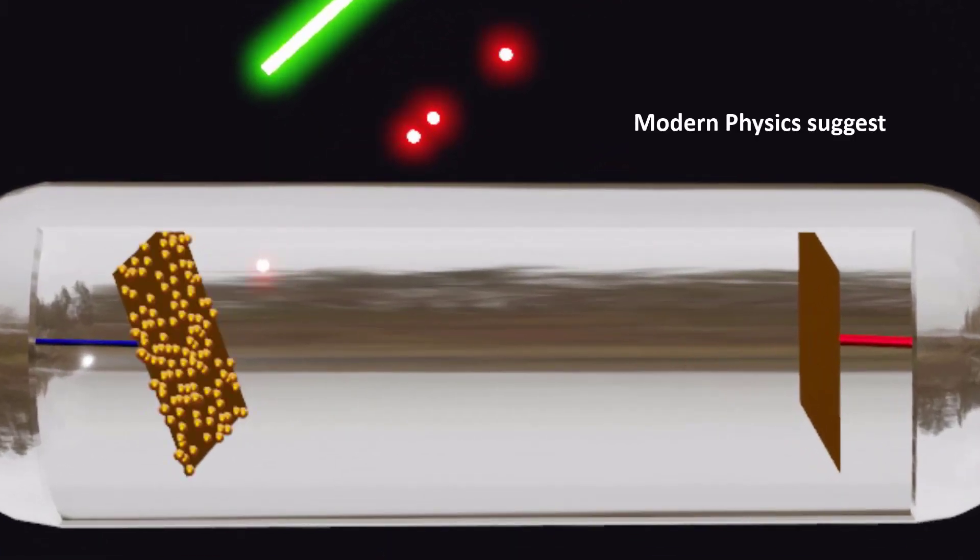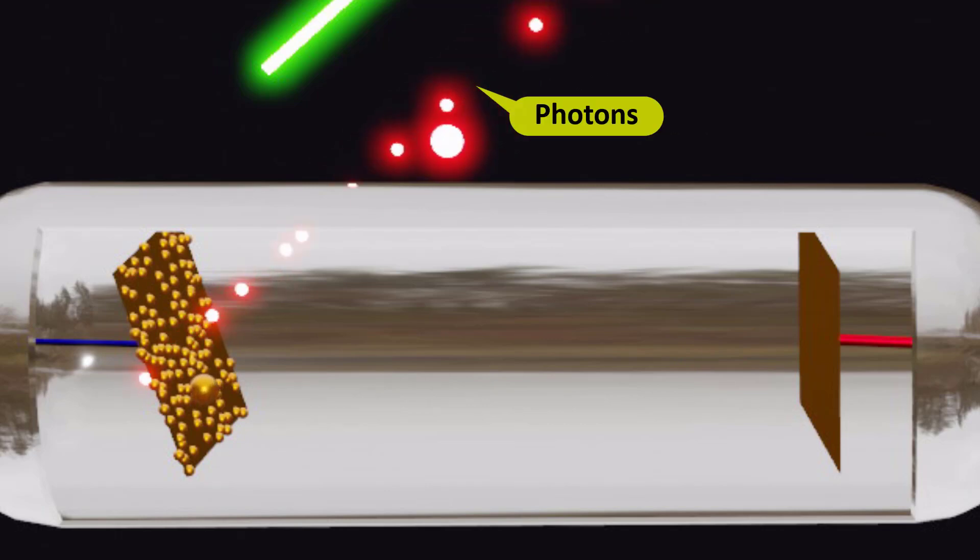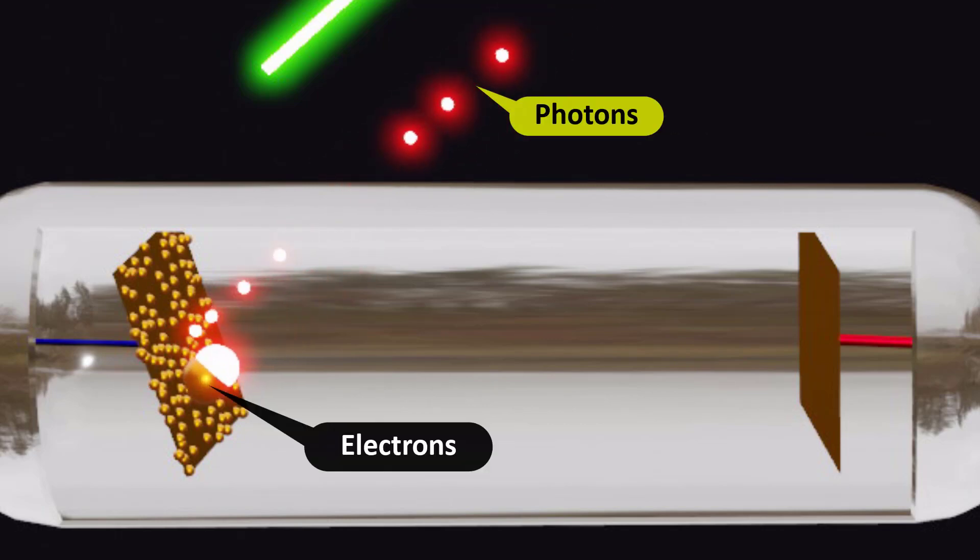Modern physics suggests that light is made up of tiny particles called photons. They collide with electrons in the metal surface and transfer their energy to the electrons within the metal.